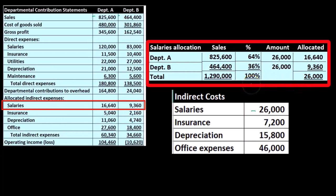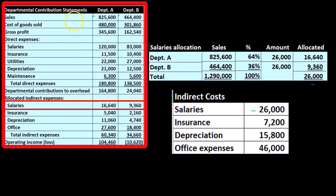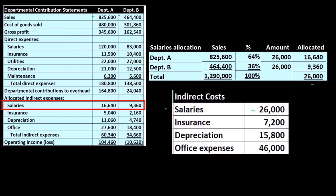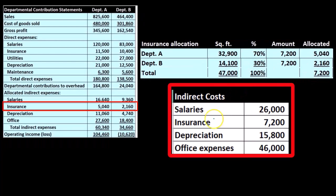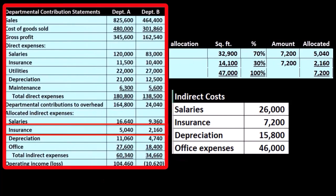All we did was use these percentages to allocate out the salaries. The percentages have to add up to 100%, and they will, because we just took the sales for the two items and calculated the percentage of total sales. Remember, it's not the case that sales has anything to do with salaries per se — we just think sales is a good activity base to use to come up with percentages to apply the salaries out more appropriately than just dividing by two.